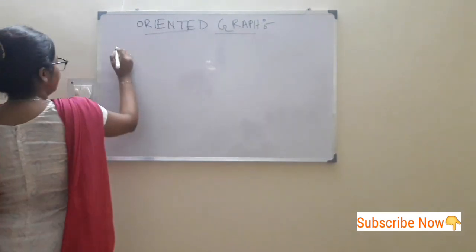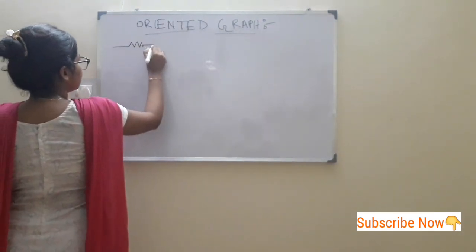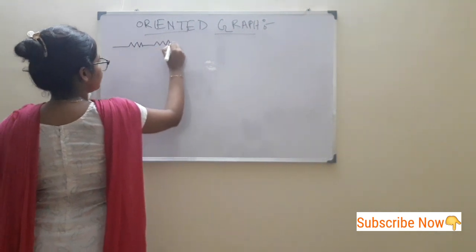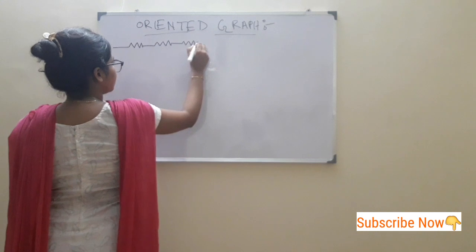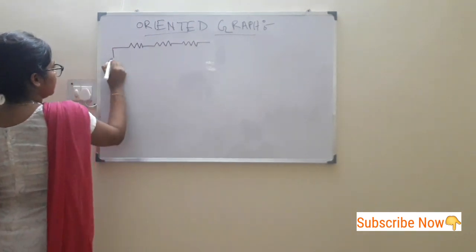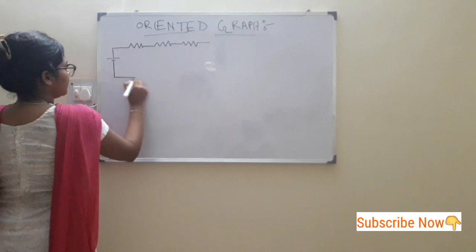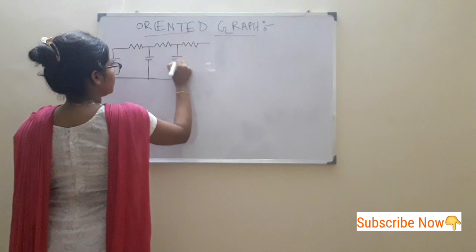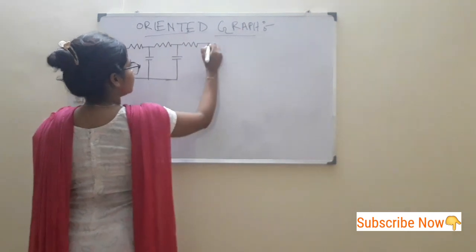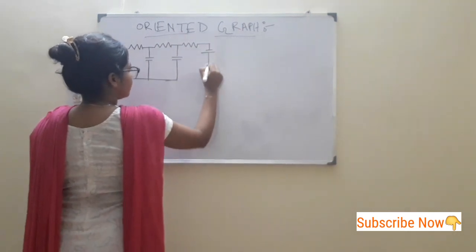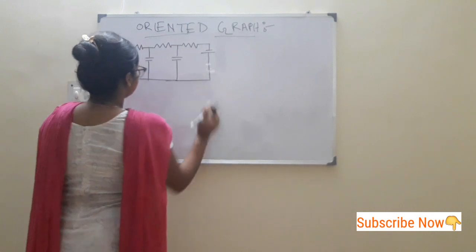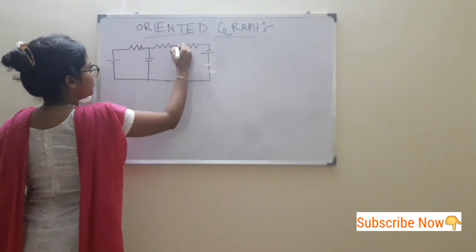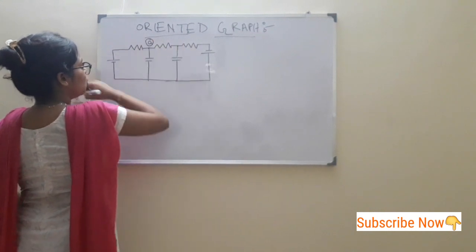If we draw a circuit like this — this is a circuit — where we are denoting this as node A.